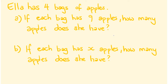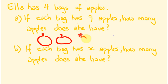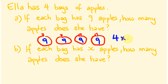I'll start with nine apples. I'll draw these four bags for part A — each one has nine apples in it. So you can work out how many apples she has altogether: she has four groups of nine, so four times nine, which equals 36 apples.